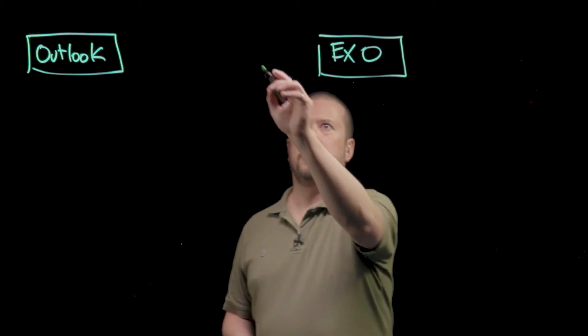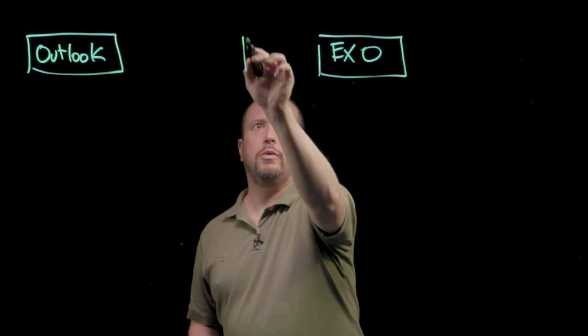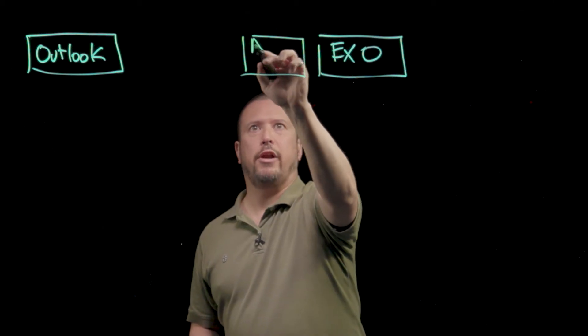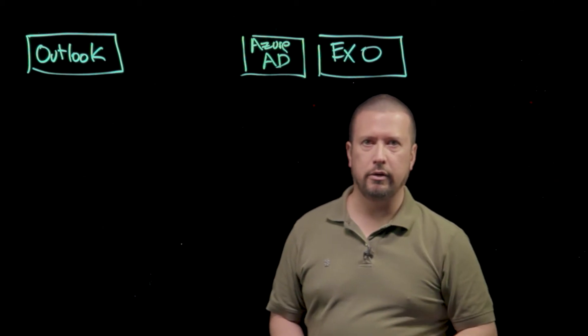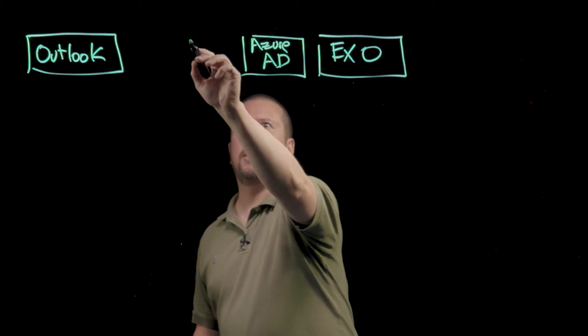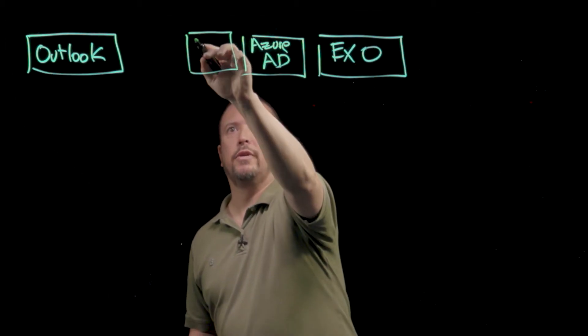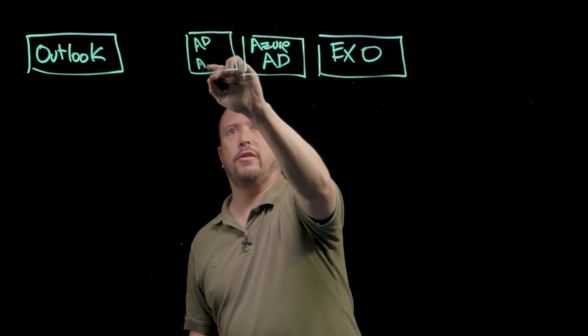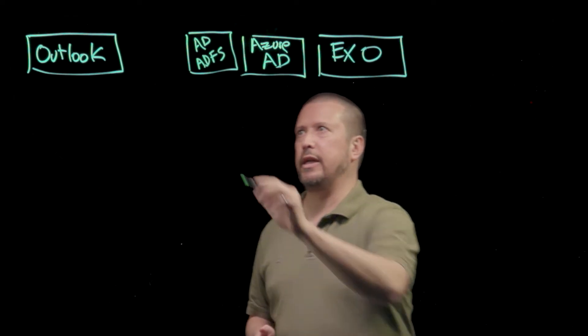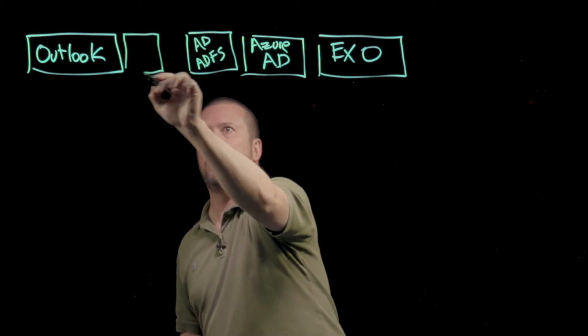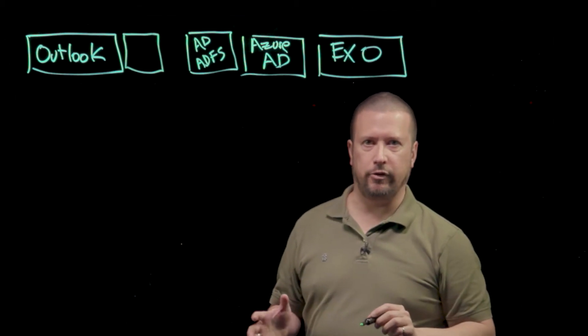Now, we need a few more players here for this to work. We need to have Azure Active Directory as the identity provider for Exchange Online. And just to make this exciting, we'll also have a federated scenario, so we'll have Active Directory and ADFS. And then finally, we're going to need one other player here that I'm going to describe in a moment that's going to be part of the client interaction.